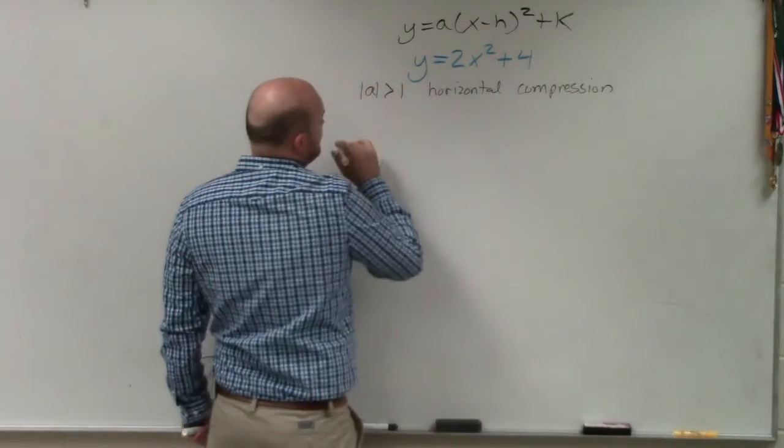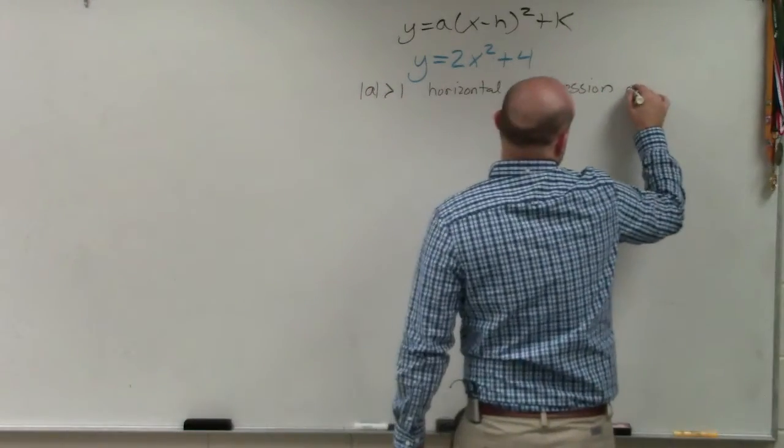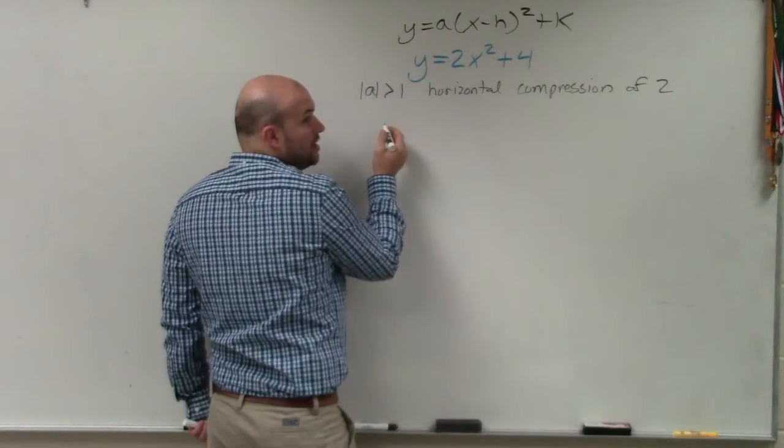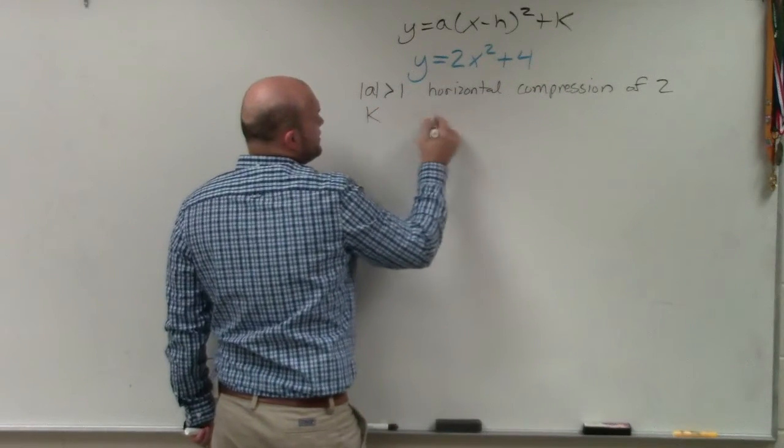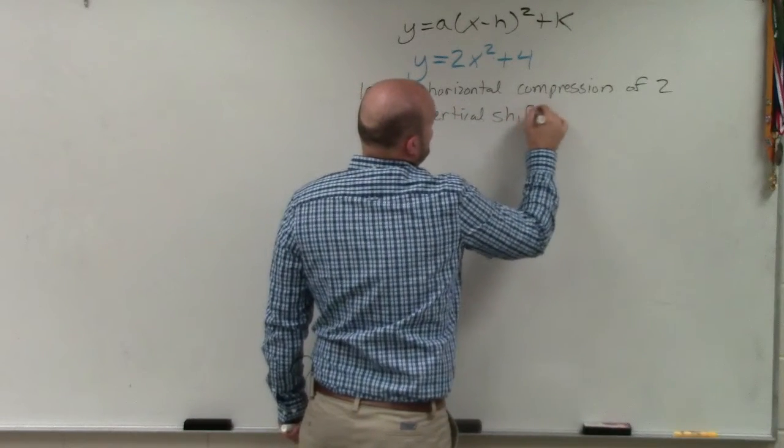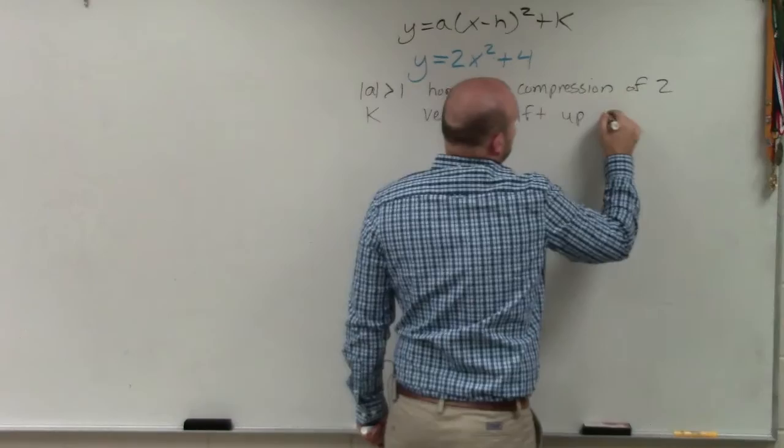So we know our k - horizontal compression of 2. And remember, k is going to be your vertical shift. So you're going to say vertical shift up 4.